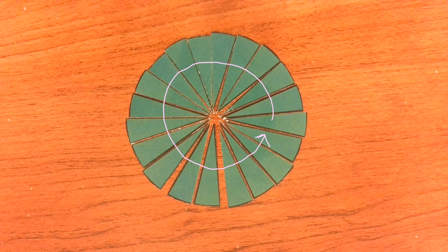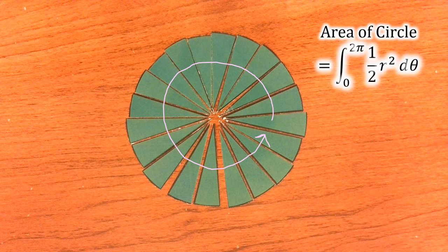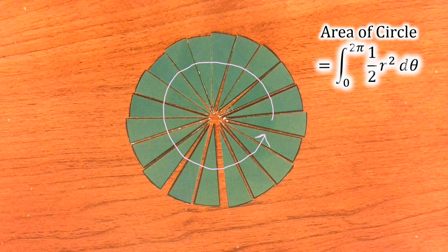And if we want to add up all of these slices to figure out the area of the circle, that would be the integral from 0 to 2π of ½·r²·dθ.